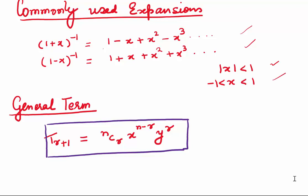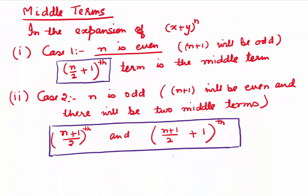Coming to the general term: the formula for general term is T sub r plus 1 equals nCr times x to the power n minus r times y to the power r. This formula can be used for finding any term of the binomial expansion, be it the third term, ninth term, or the middle terms. To find the middle terms, we have two cases because n can be even or odd.